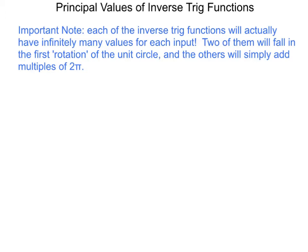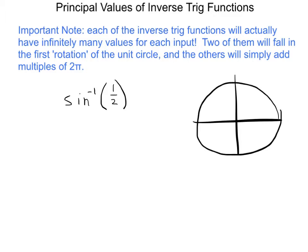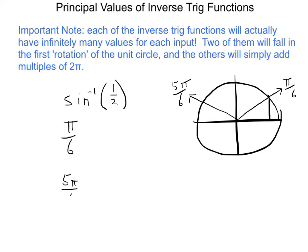Let's look at the inverse sine of 1/2. That means we've got our unit circle and we're looking for a y-value of 1/2 — a short y-value. That's going to happen at π/6, and it's also going to happen at 5π/6. So in some sense, inverse sine has two answers: π/6 and 5π/6.